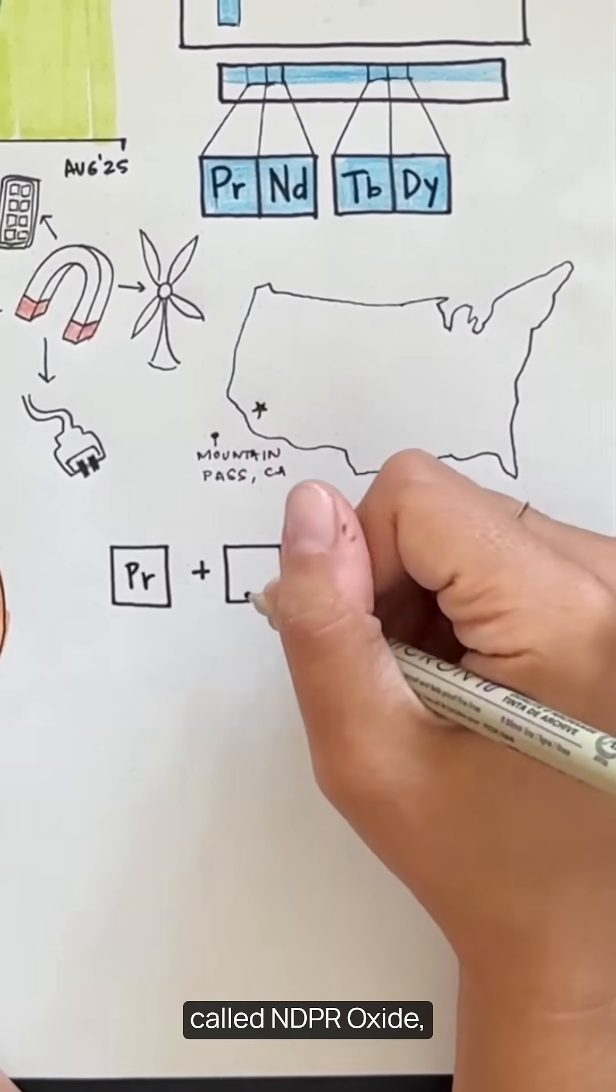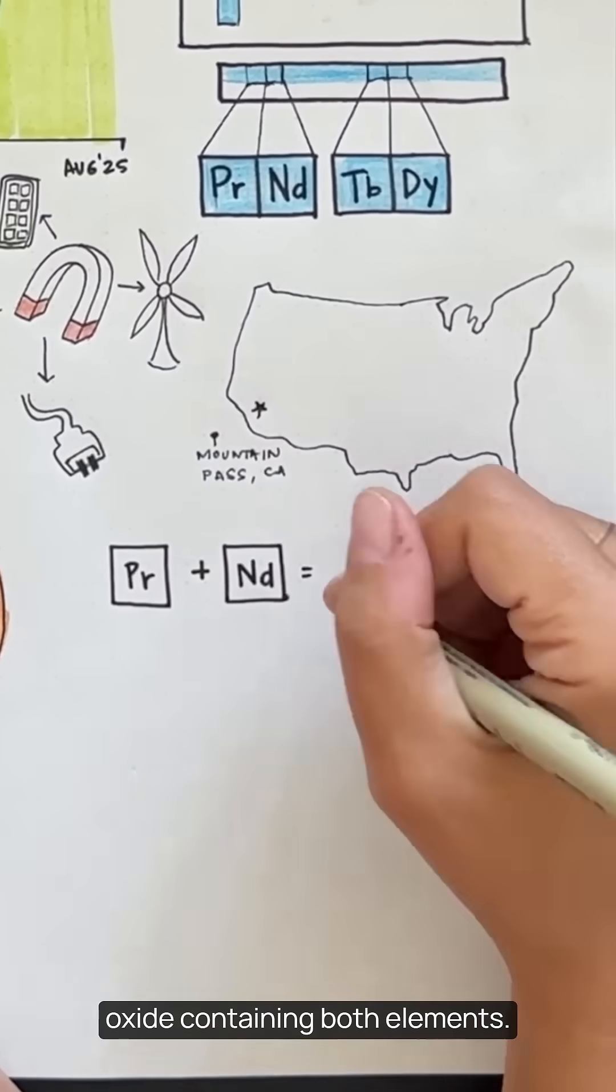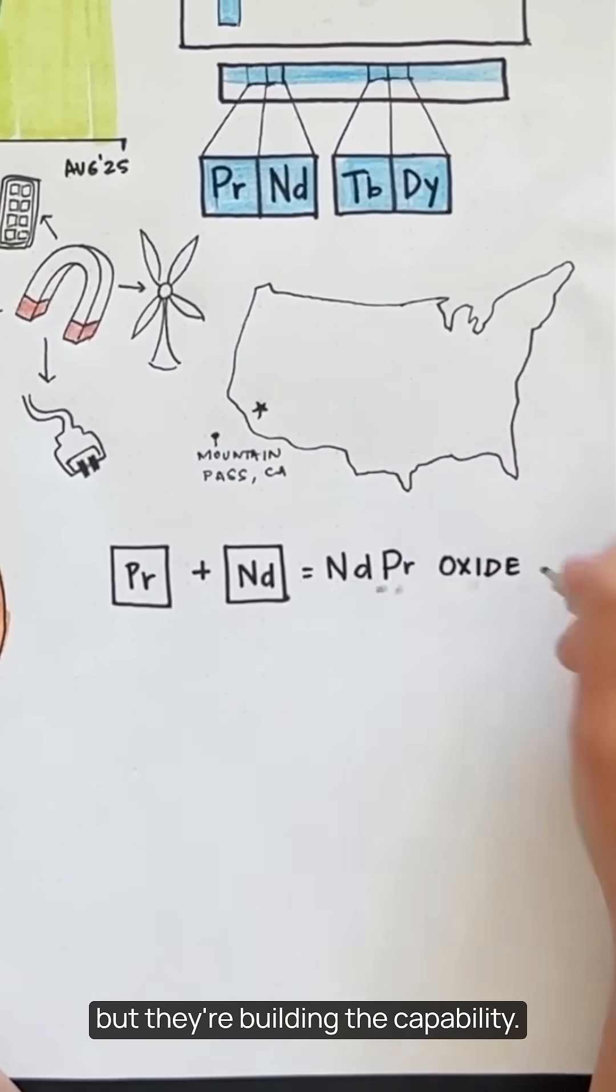MP Materials makes a core product called NDPR Oxide, a mixed rare earth oxide containing both elements. MP doesn't yet make magnets, but they're building the capability.